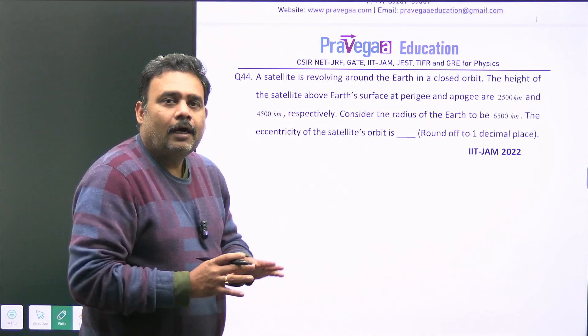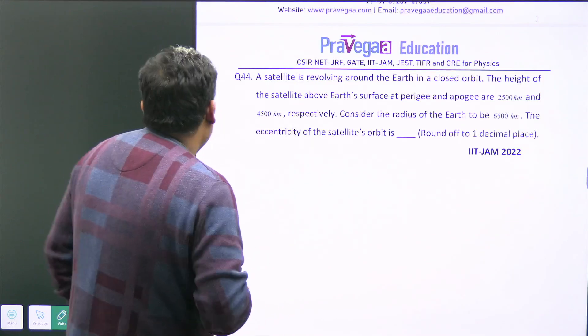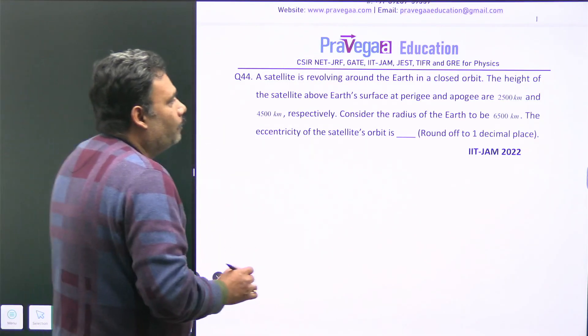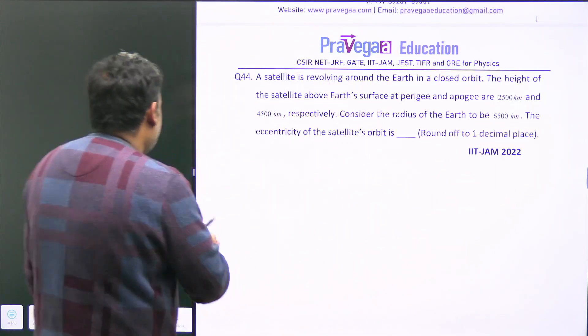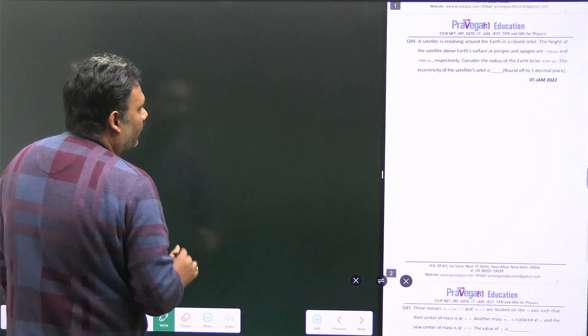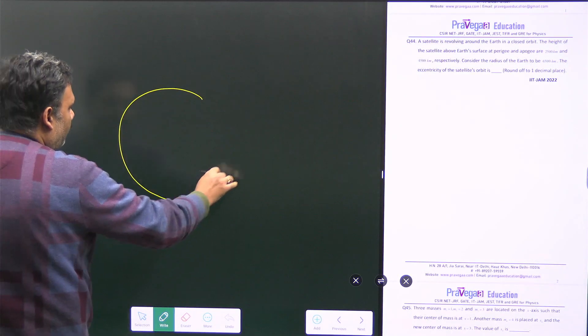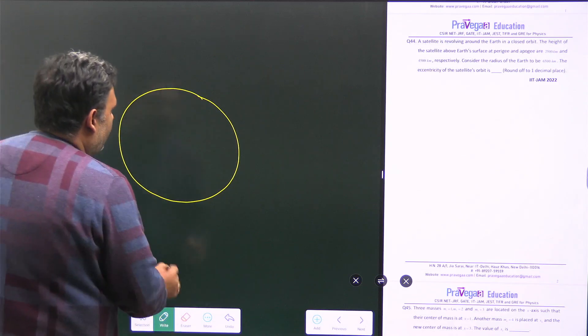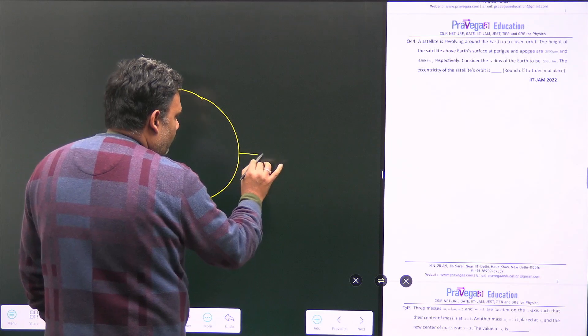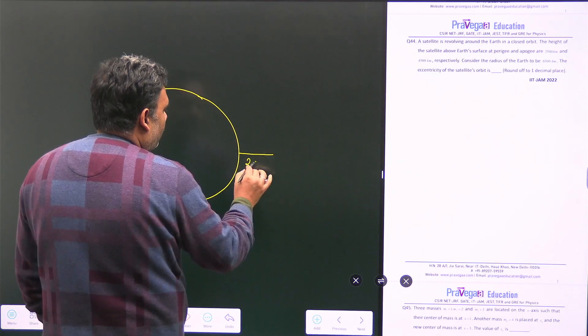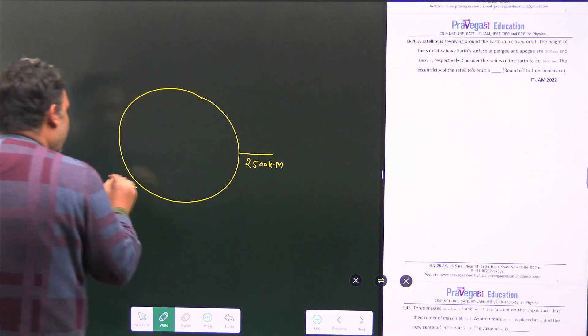So the most important thing is how you try to make the complete picture. So in this thing, the biggest thing is the radius of earth. So let us try to make this figure completely. We can assume this is our radius of earth and this is our perigee, meaning minimum distance. So from the surface, it has distance only 2500 km and at the apogee,